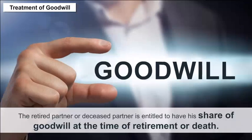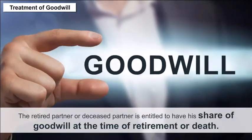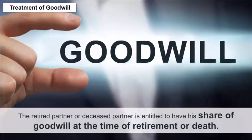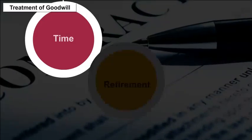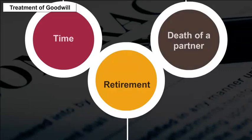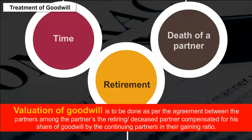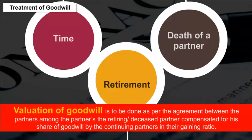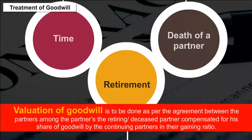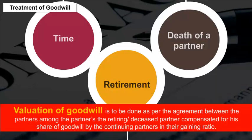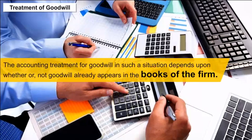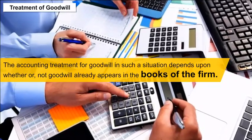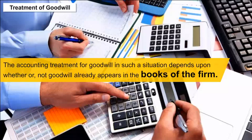The retired or deceased partner is entitled to have his share of goodwill at the time of retirement or death. Valuation of goodwill is done as per the agreement between the partners. The retiring or deceased partner is compensated for his share of goodwill by the continuing partners in their gaining ratio. The accounting treatment for goodwill depends upon whether or not goodwill already appears in the books of the firm.